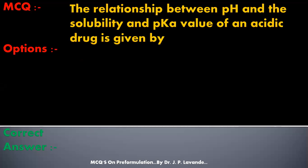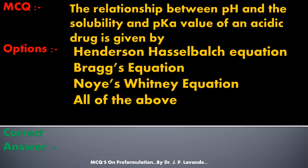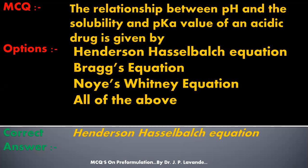Next question: the relationship between pH, solubility, and pKa value of an acidic drug is given by — options are: Henderson-Hasselbalch equation; Bragg's equation; Noyes-Whitney equation; or all of the above. The correct answer is the Henderson-Hasselbalch equation.